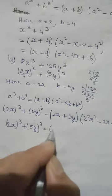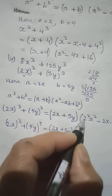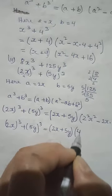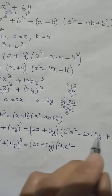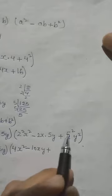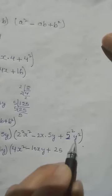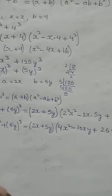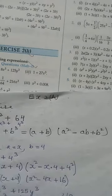Here 2x plus 5y — both have alphabets so we cannot combine them, leave it. Then 2 squared is 4, x remains x squared. Then 2 into 5 is 10xy. Then 5 squared is 25, y squared remains. Since they are all unlike terms, we cannot add or subtract them. So the final answer is: 2x plus 5y, times 4x squared minus 10xy plus 25y squared. Number three — please try it as your homework.